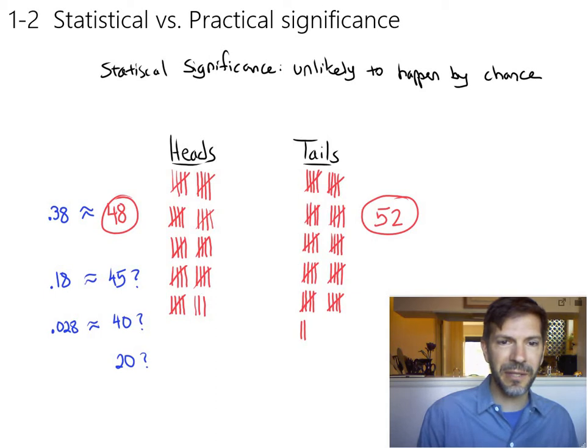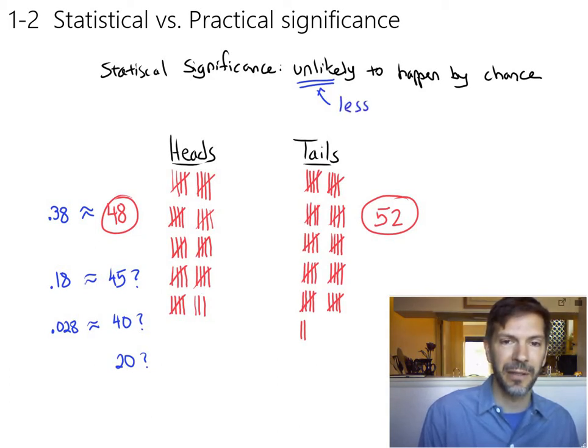So statistical significance we say is unlikely to happen by chance. And by unlikely, typically what we mean - we'll change this from time to time - but typically what we mean by unlikely is less than a 5% chance of happening.